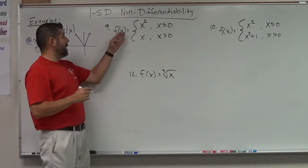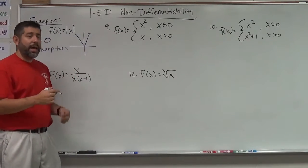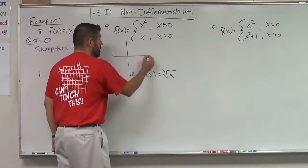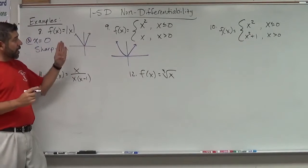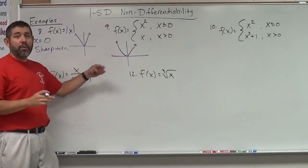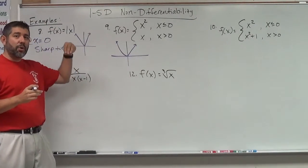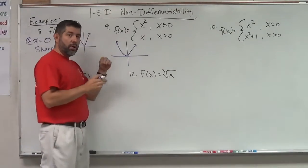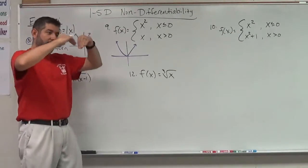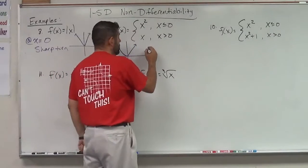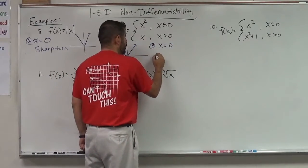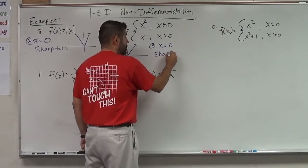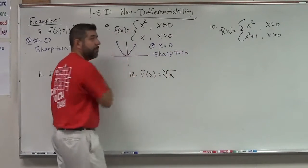Okay, what about this one, number 9? X squared when x is less than 0 and x. So this is kind of a really easy function to take a look at. It looks like that, right? X squared and x. What happens there? We have a sharp turn. It gets to a corner. So a corner or we call a cusp when they come in like this on each other. This is not differentiable at x equals 0 because it's, again, a sharp turn, just like the previous one.